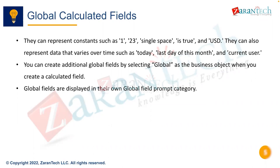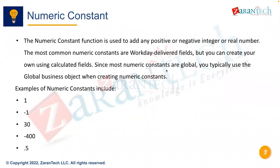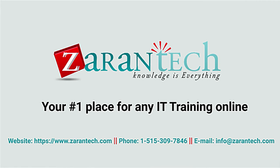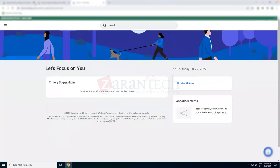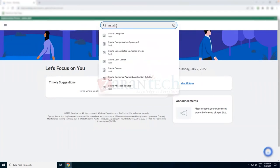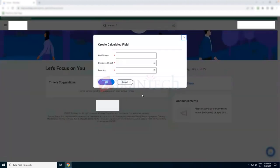Global business objects are available for any business object and visible to all users. Fields that are global are not specific to any particular business object — values like 1, 23, a single space, 'is true,' or the currency USD. A value of 23 doesn't tell us it has to be associated with a worker or expense; it's just a constant value of 23, so it can be put into a global calculated field bucket, usable by any report regardless of business object.